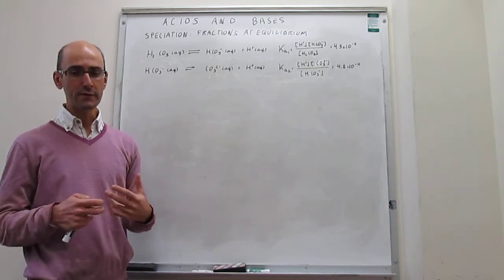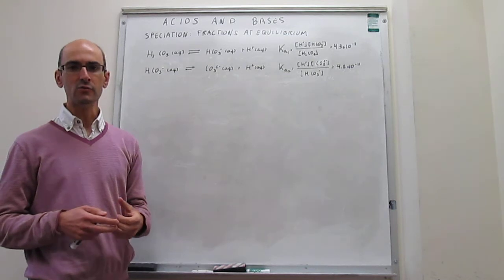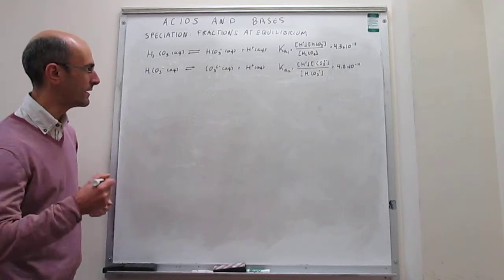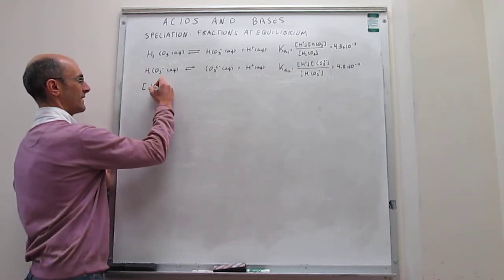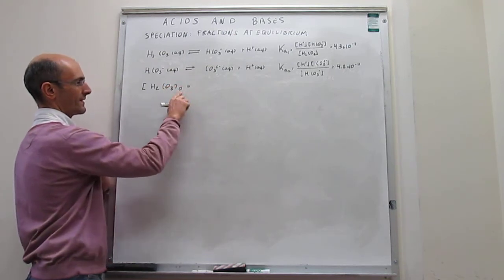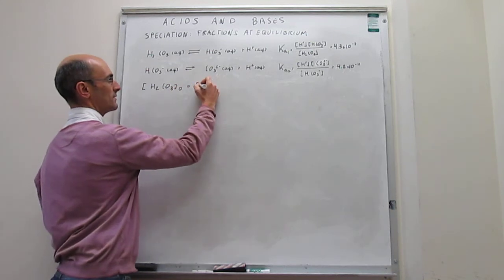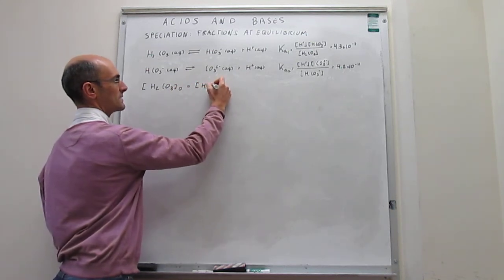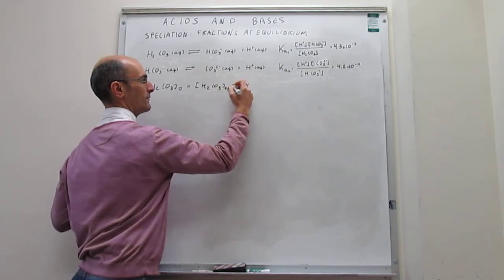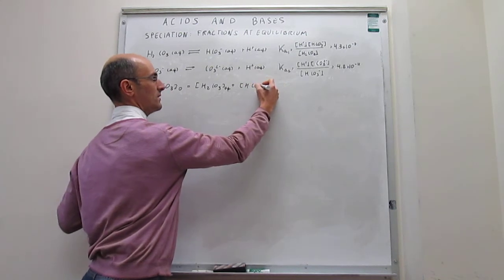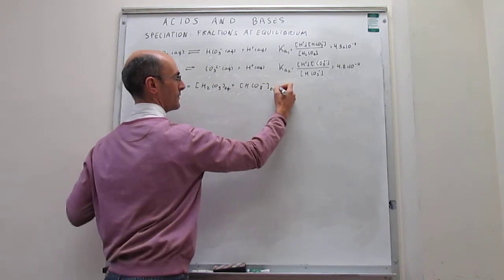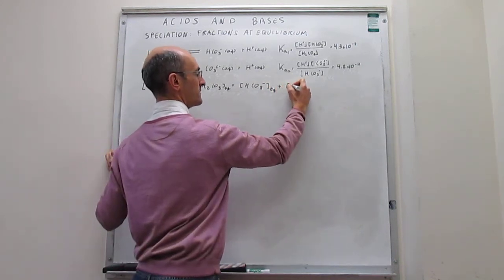The first thing we can recognize is that there has to be some sort of mass balance among all of those carbonate species. The initial concentration of carbonate we put into our medium — C sub zero — at the start of the process has to be identical to the sum of all the species that contain carbonate at equilibrium: undissociated carbonic acid, bicarbonate at equilibrium, and carbonate ions at equilibrium.